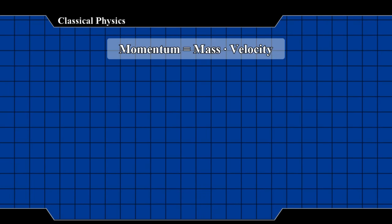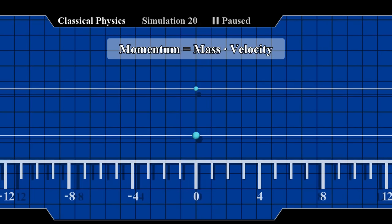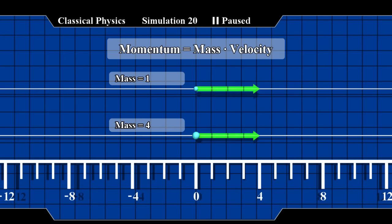Momentum is the product of mass and velocity. Here are two particles. The lower one is four times more massive. So if we give them the same velocity, then the lower one's momentum will be four times greater.